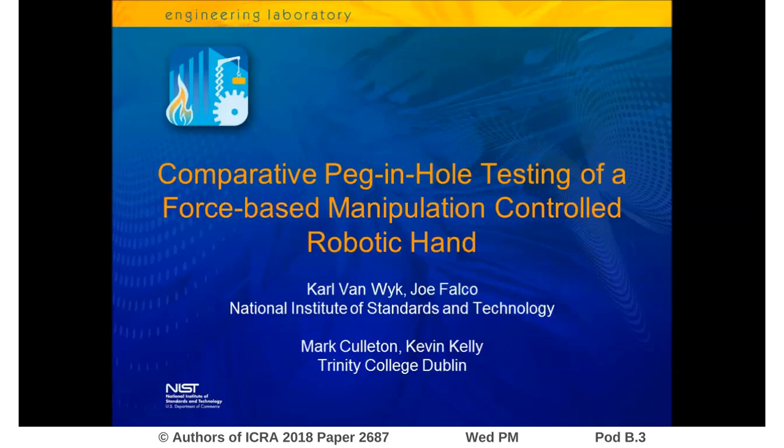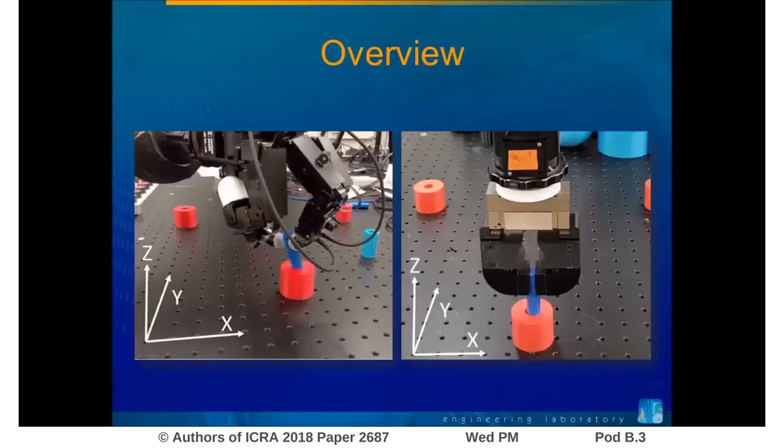We will be presenting our work entitled Comparative Peg-and-Hole Testing of a Force-Based Manipulation-Controlled Robotic Hand at ICRA 2018. Force-based manipulation control strategies are evolving as a primary mechanism in robotics for performing the fine manipulation tasks typical within manufacturing assembly.